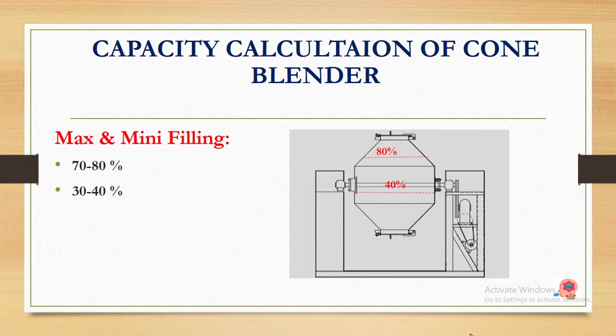Regarding maximum and minimum capacity: if you have a 200-liter blender, you can use the density to calculate capacity in kg. The maximum capacity you should use is 80%. You should not fill the blender beyond 80% so that mixing efficiency is maintained. You can go from 80% down to 60% or 40%, but not below the minimum effective value.